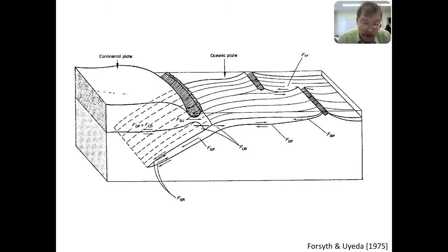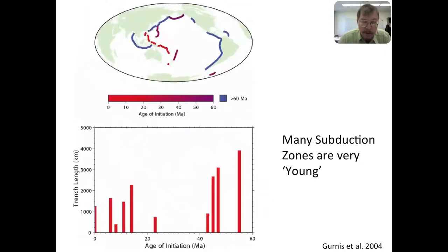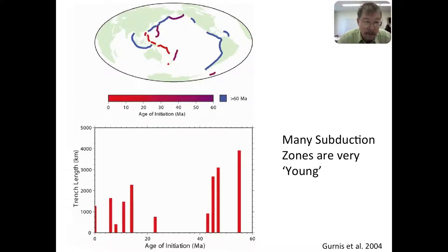Now I want to switch gears and move on to the time dependence of this system and a set of observations you may not be familiar with. This picture is color-coded by what I call the age of initiation — we've gone into the geological record to determine the best estimates of when each subduction zone, at that particular polarity, started.